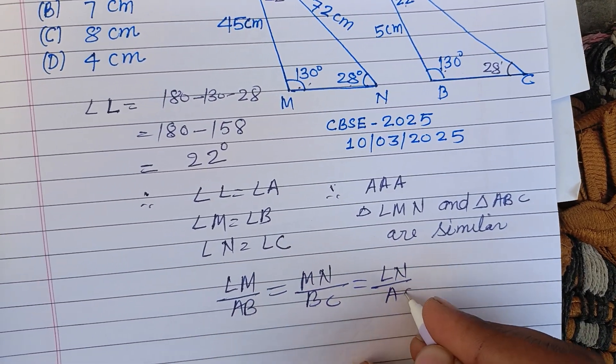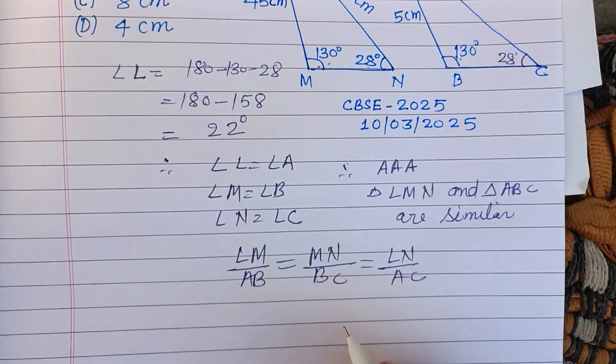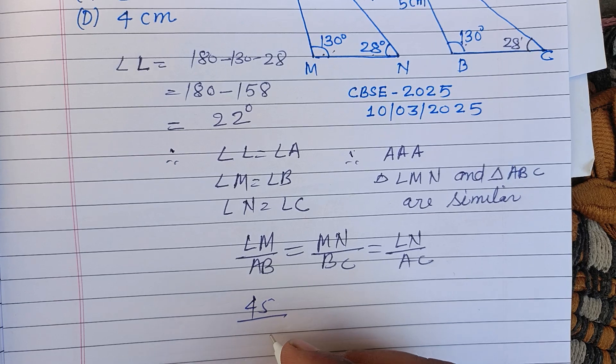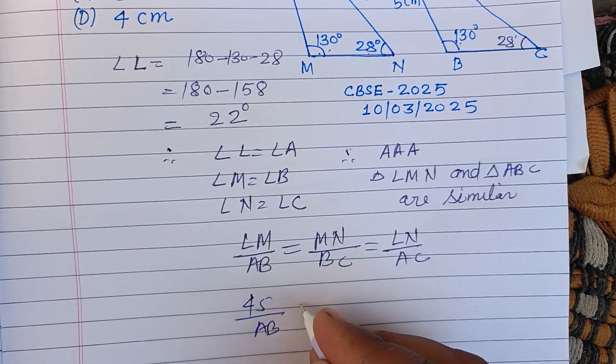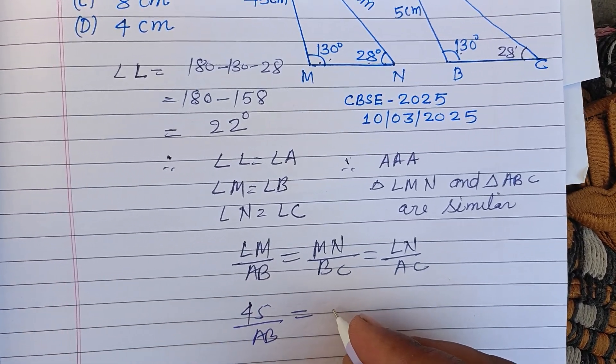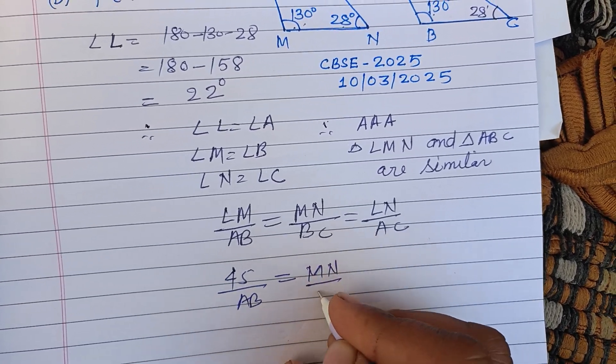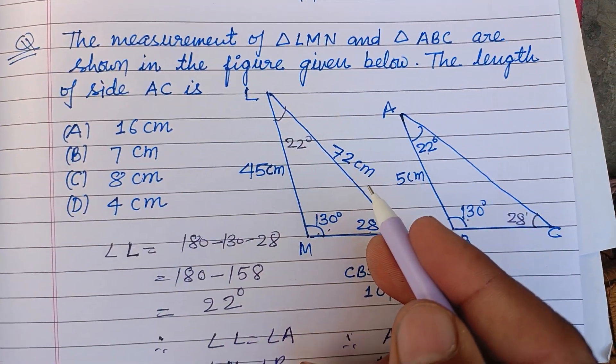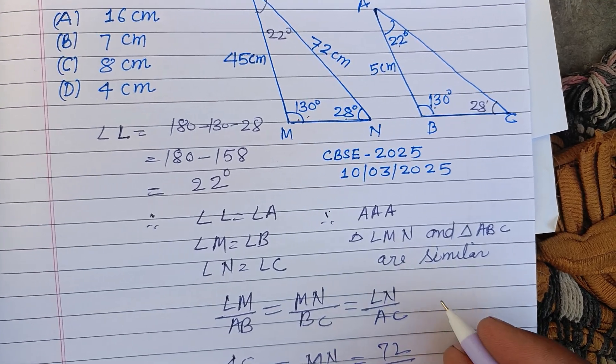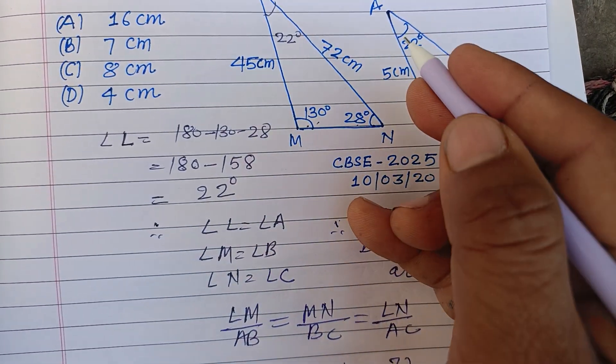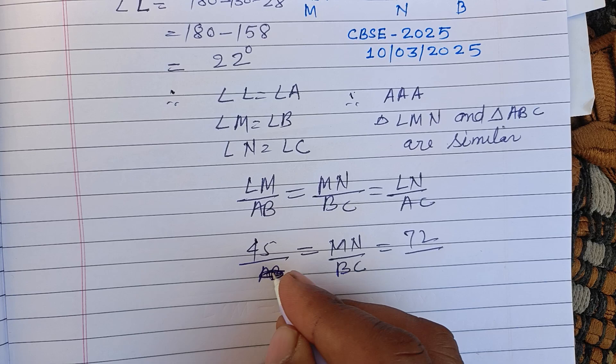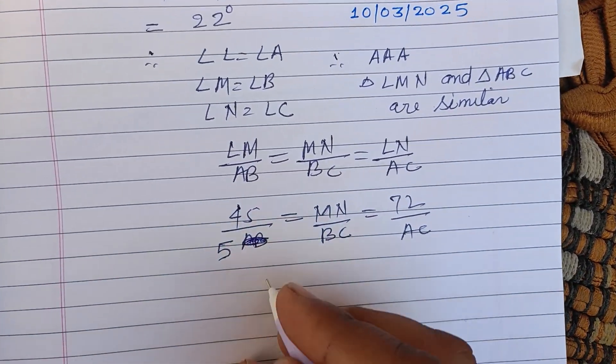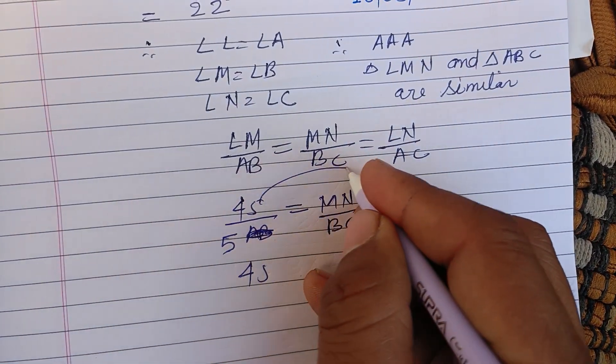Here AC is required. Putting the values, LM is 45 upon AB. MN is not given, BC is also not given. LN is given as 72 upon AB, which is given as 5. So we take 45 upon 5 equals 72 upon AC.